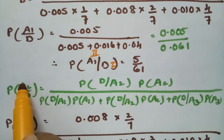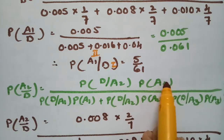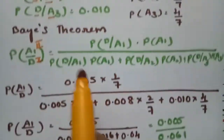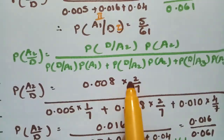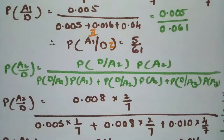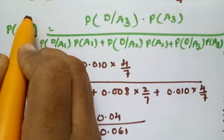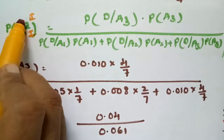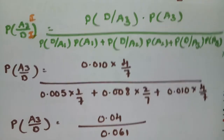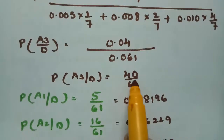Similarly, the probability that the defective pipe came from plant A2 is P(D|A2)·P(A2) divided by the same denominator. P(D|A2) = 0.008 and P(A2) = 2/7, giving P(A2|D) = 16/61. For plant A3, substituting P(D|A3) = 0.01 and P(A3) = 4/7 and cancelling 1/7 gives P(A3|D) = 40/61.